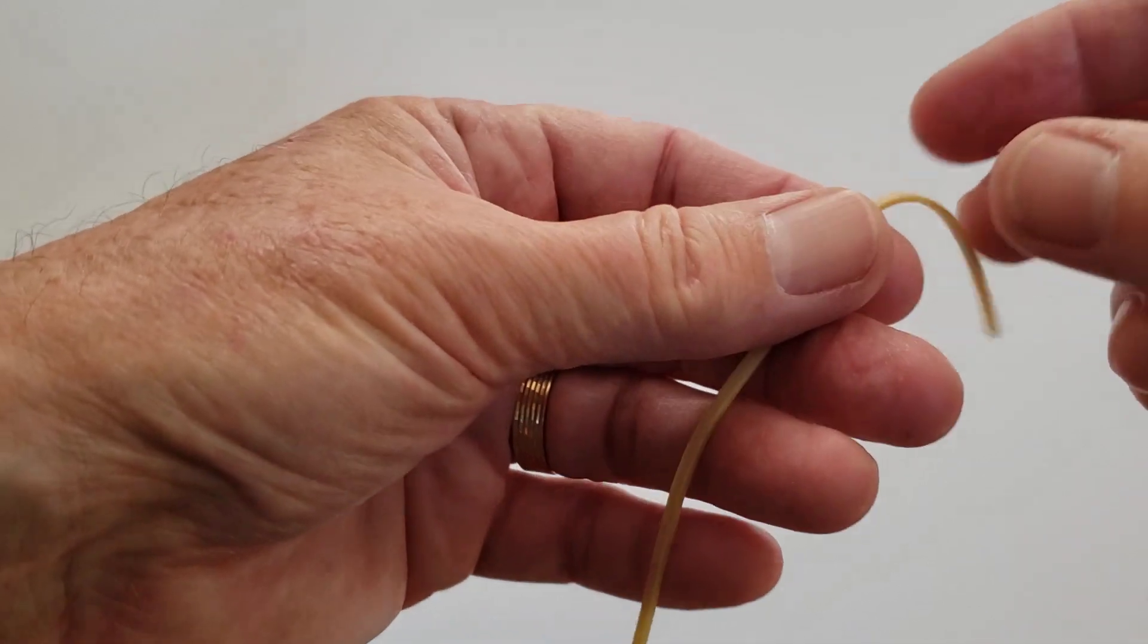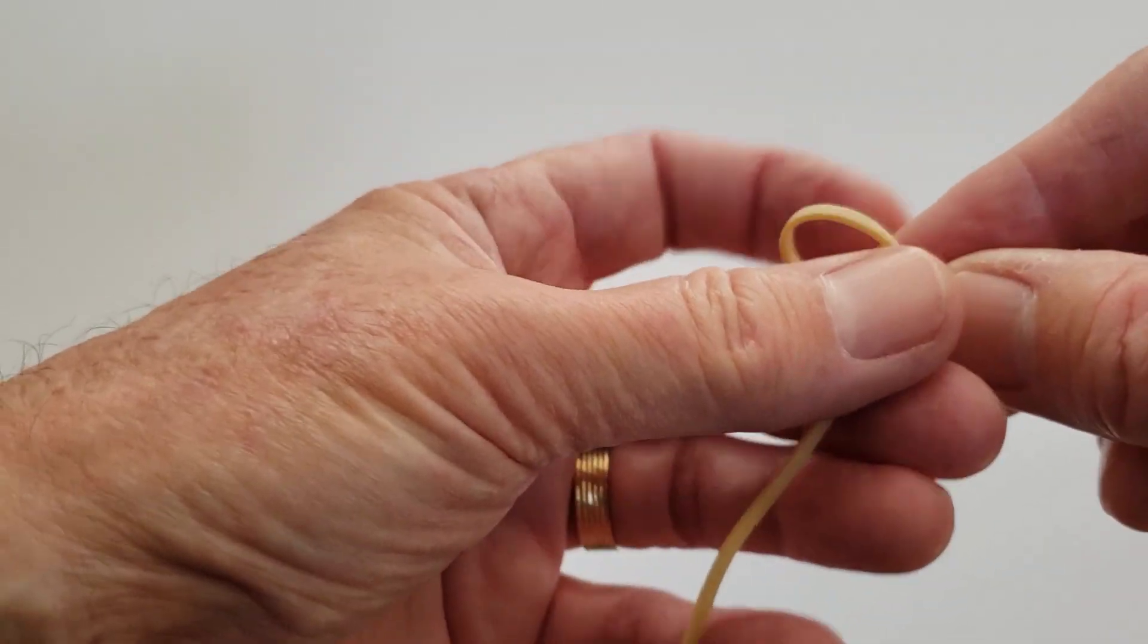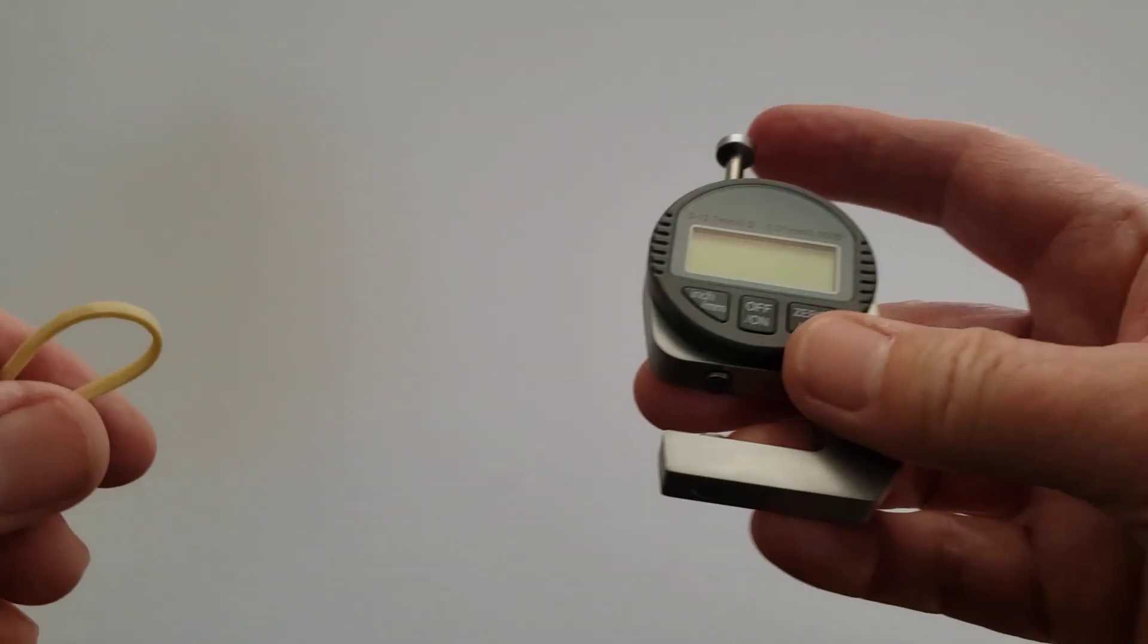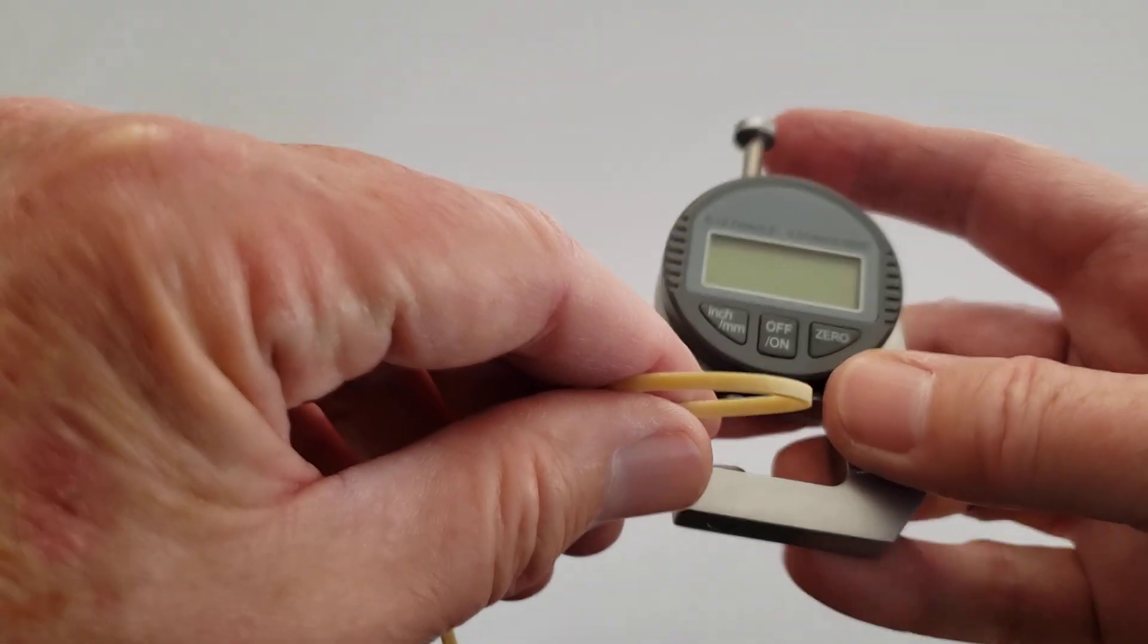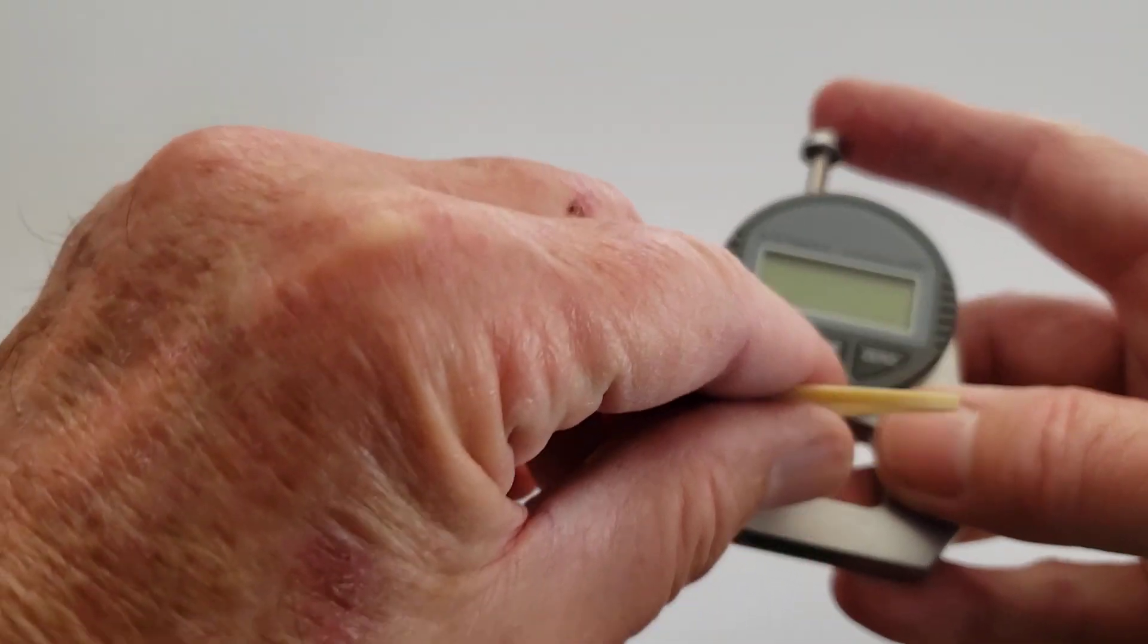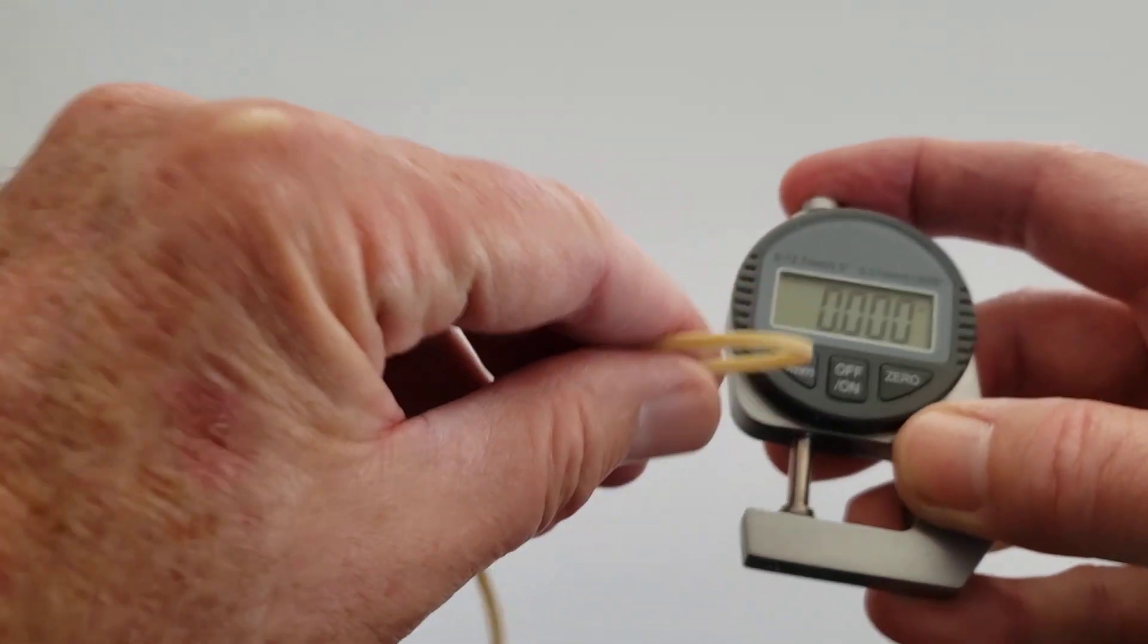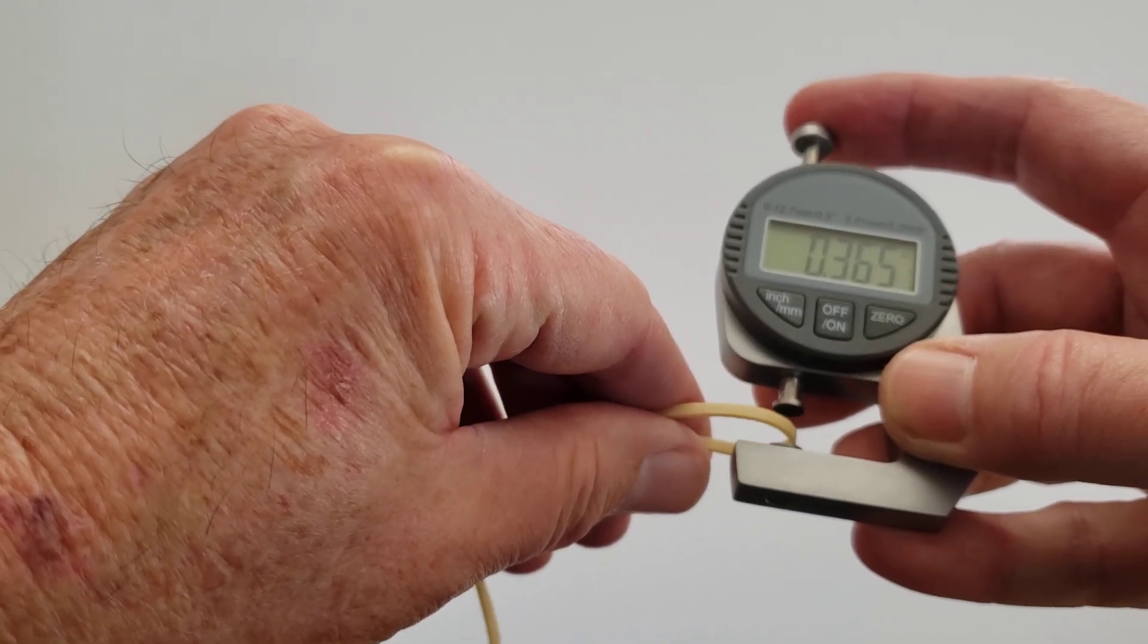Let's go ahead and measure the width of each one and see what we ended up with. Here I have a digital thickness gauge. These are available on Amazon for about $29. Let's turn it on. Zero it out. Let's measure it here.